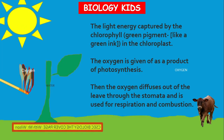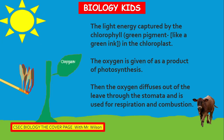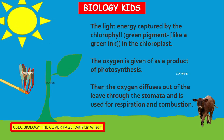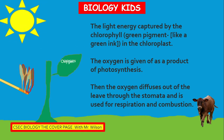Light energy is captured by the chlorophyll, which is a green pigment in the plant — like ink in the plant. It is found in a part of the cell called the chloroplast. Oxygen is given off as a product of photosynthesis. As you can see in the animation, water comes from the soil and oxygen is given off by the plant.